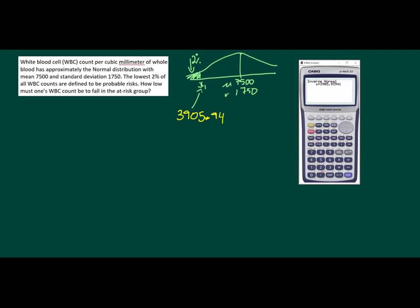So what we're saying is that to be in the bottom 2%, you're below that WBC count. So you would say below or from 3905.94 WBC count. And below is the lowest 2% value, or something like that. That's a merit question or a value question.